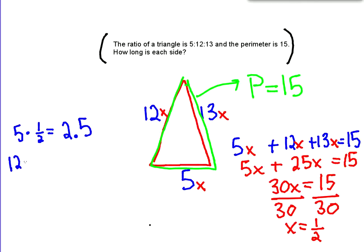And then you have 12 times 1 half, so you're just dividing 12 in half, and that is 6. And then 13 times 1 half is going to equal, well, we know that half of 12 is 6, so half of 13 is going to be 6.5, because we added one number.